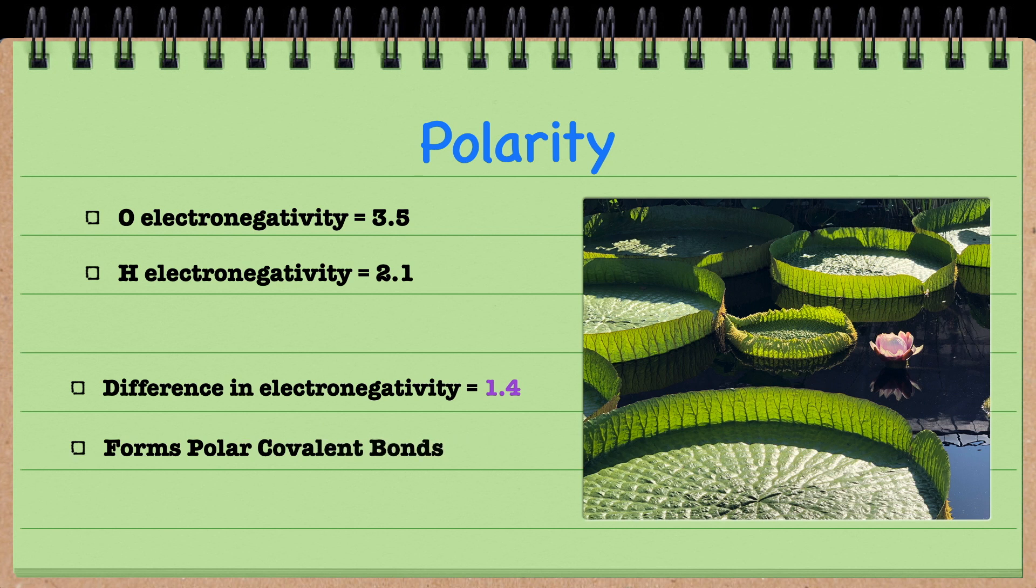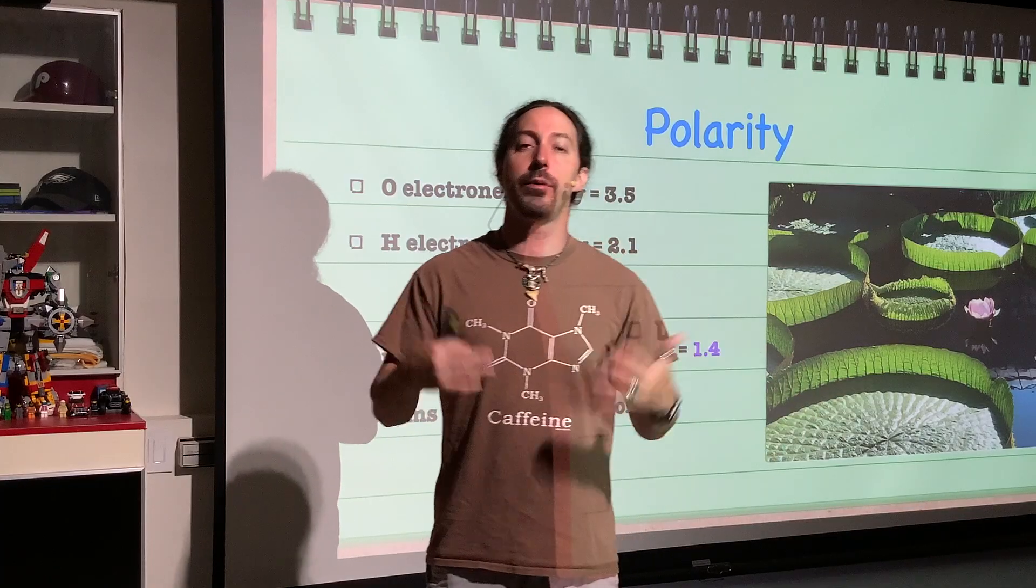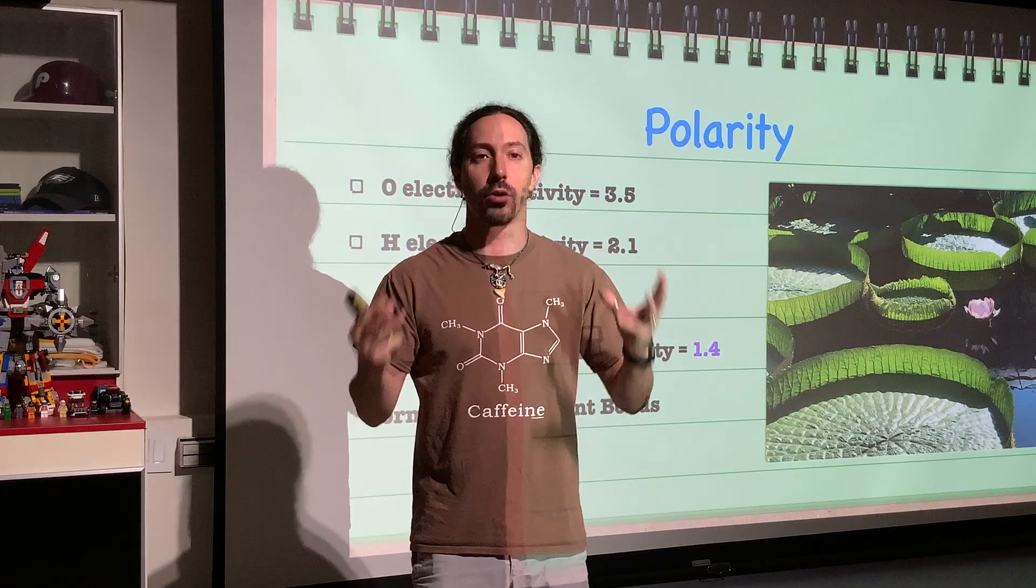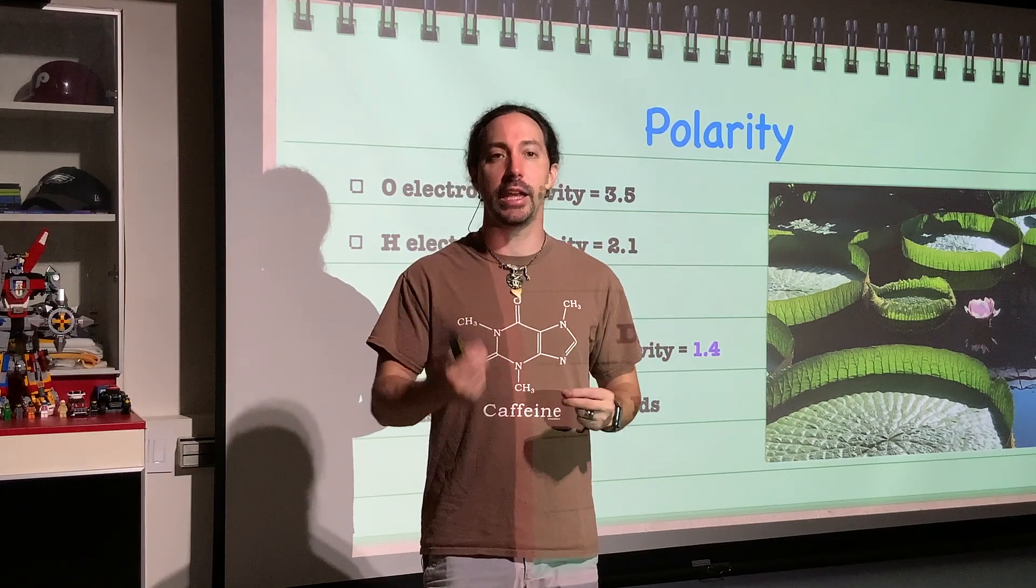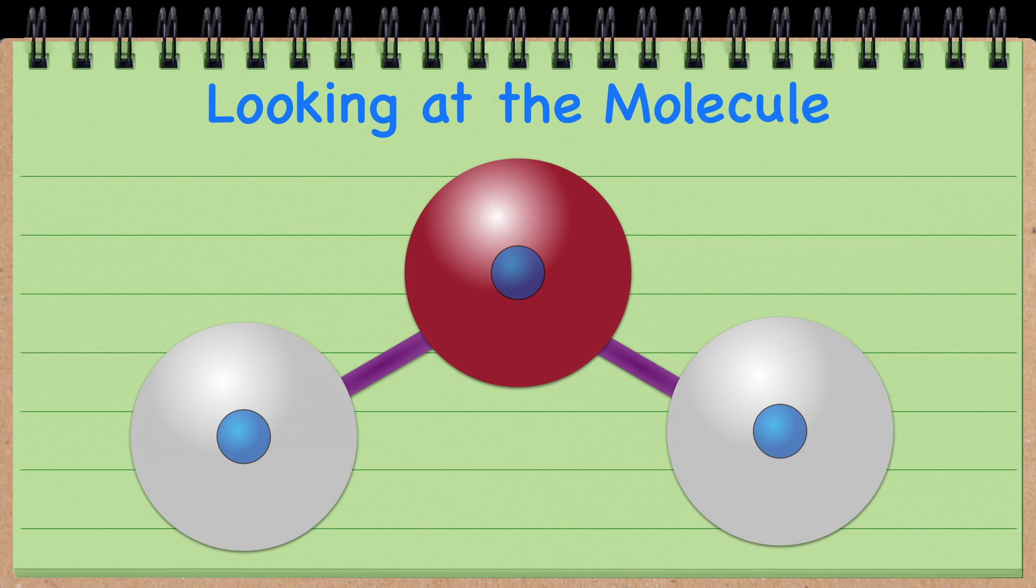So that means that they form a polar covalent bond. It's not an equal sharing of electrons all over, like what we would see in a non-polar covalent bond. This is a polar covalent bond, an unequal sharing of electrons.